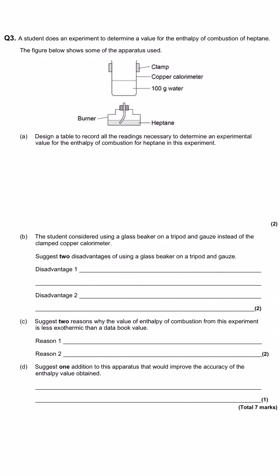A student does an experiment to determine a value for the enthalpy of combustion of heptane. The figure below shows some of the apparatus used. You can see that we've got our heptane fuel inside the spirit burner and there is a wick here which will draw up that fuel to where it will ignite here and burn.